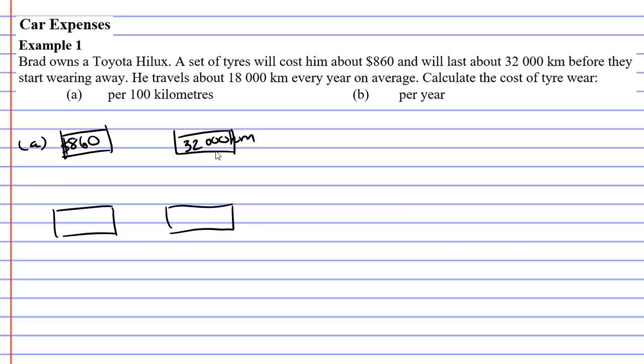Now, in question A, they want you to find the cost per 100 kilometres. So we're going to put the 100 kilometres under the 32,000 kilometres and we're going to have two arrows coming down and we're trying to find question mark.